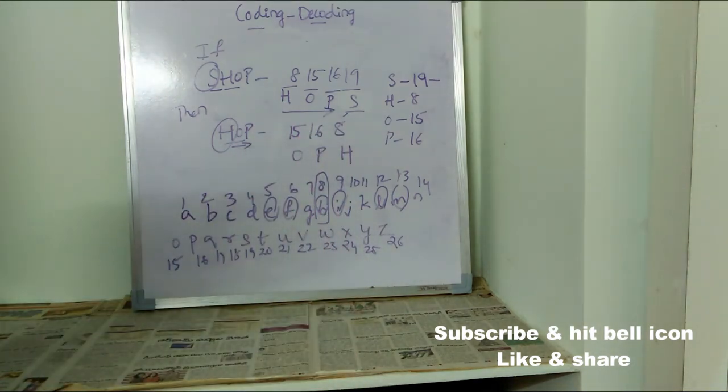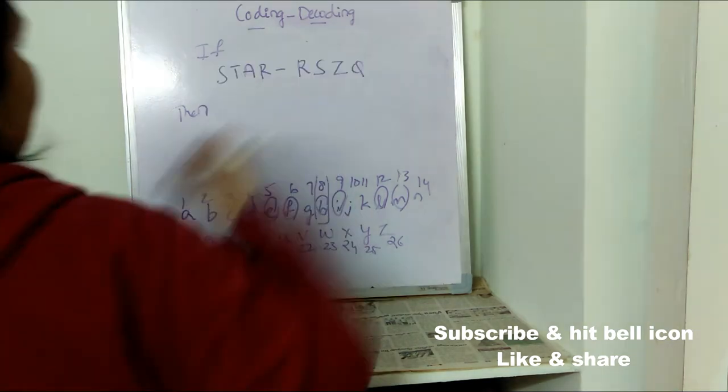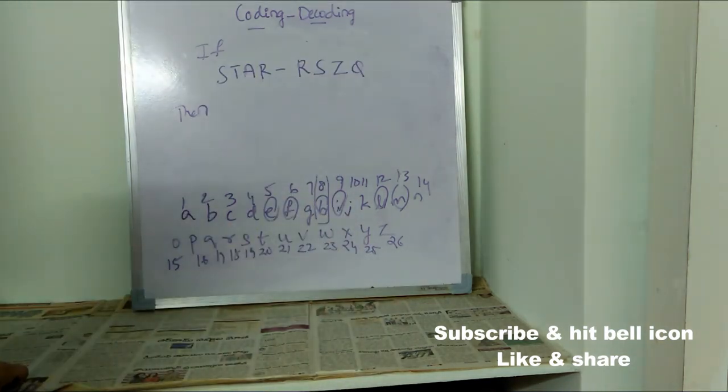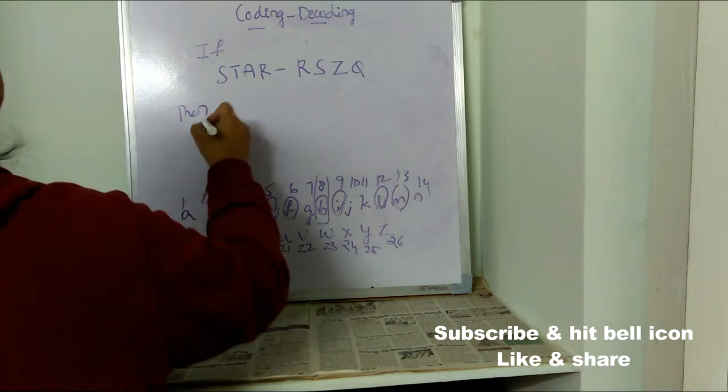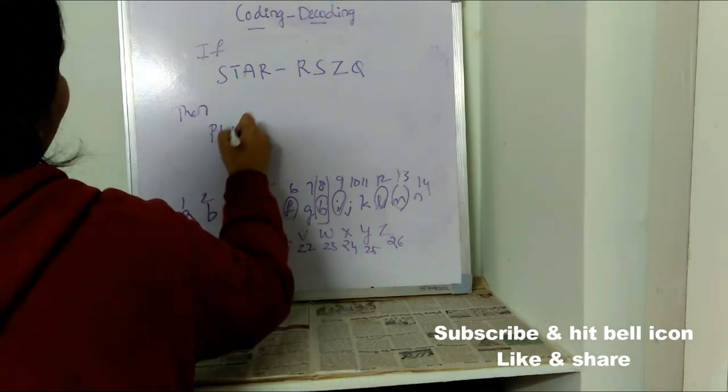So HOP can be written as 15 16 8. If STAR is written as RSZQ, then PLANE is written as dash. What is the question?